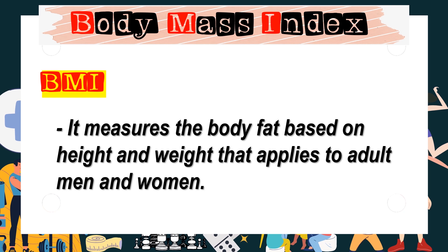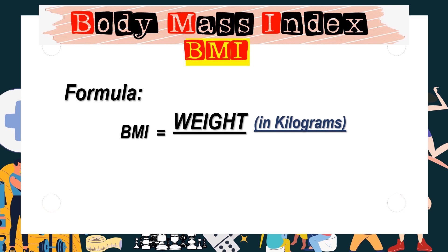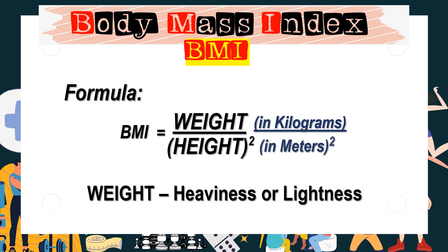To identify our BMI, we need to use this formula. BMI is equal to weight over height squared, meaning we need to multiply the height twice. Always remember that we need to use the unit of kilograms for weight.